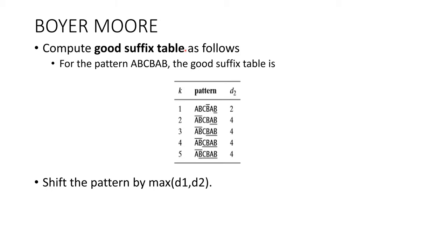The next one is the good suffix table. This is the difference between Boyer-Moore and the Horspool algorithm. For a particular pattern, here is how the good suffix table is computed. The pattern is A, B, C, B, A, B. If you observe the last character B, it is matching with the rightmost B. So if this B has to come here, the number of positions the pattern has to shift is 2. That is why D2 is 2.